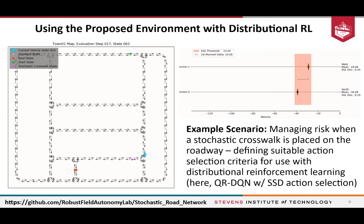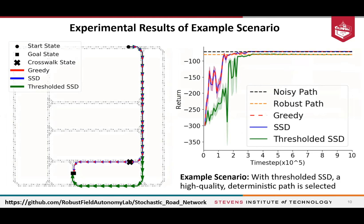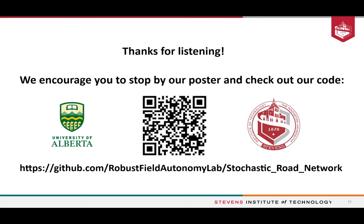We can ensure that the distributions learned are accurate and the outcomes can meaningfully affect route-level decision making. As a case study, we applied a threshold such that if expected returns fall within that threshold, we use the variance of return distributions to make a decision. This led us to choose a slightly different path — one that skips around the stochastic crosswalk, takes a little extra time on average, but a much more deterministic amount of time. We encourage you to stop by our poster and check out our code.